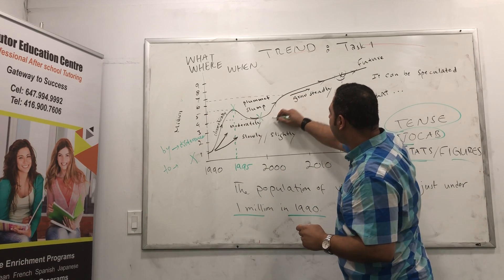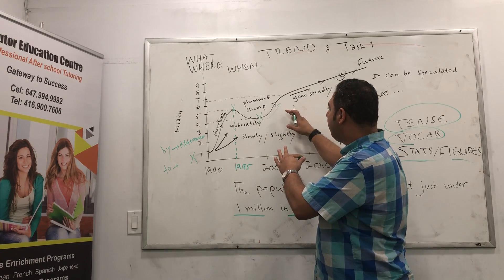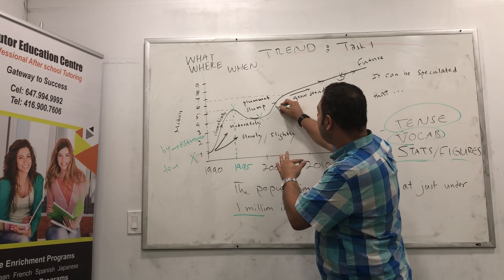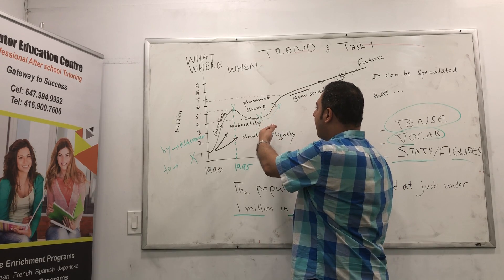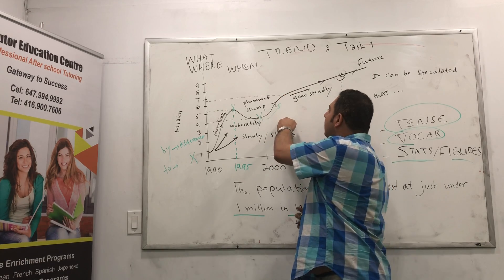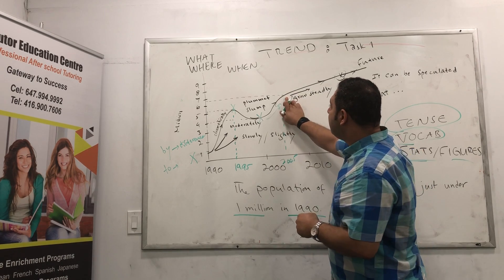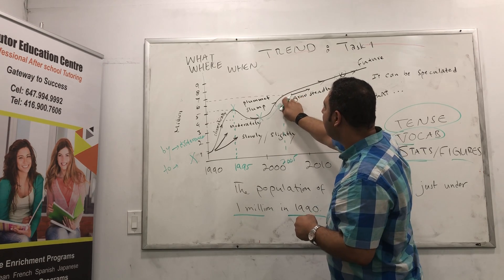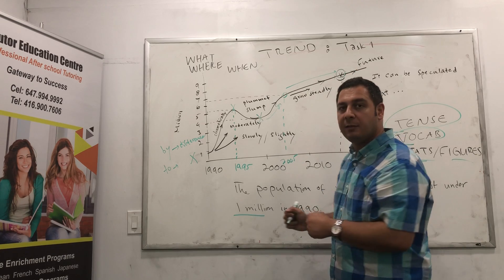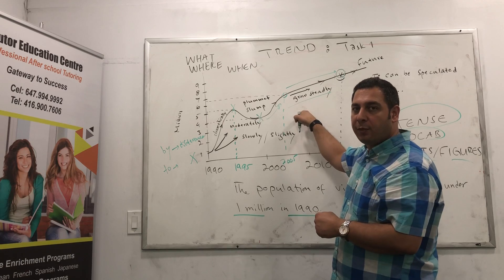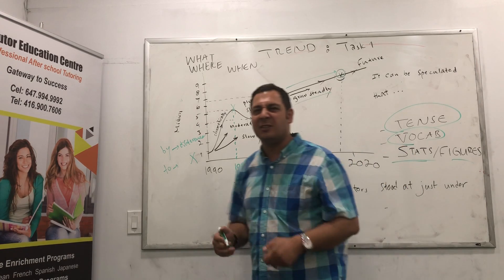Then you look at the remaining movement. The trend rises again — another dramatic growth. You could say: 'The number of visitors rose or increased dramatically until approximately 2005, reaching just below seven million.' From that point forward, as you can see, we have a steady growth, so you could say the population has been...